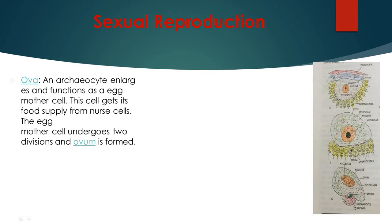That means like this, they enlarge. Archaeocyte or coenocyte enlarges and functions as egg mother cell. And by receiving food, they enlarge. They receive food from the nurse cells or trophocytes.